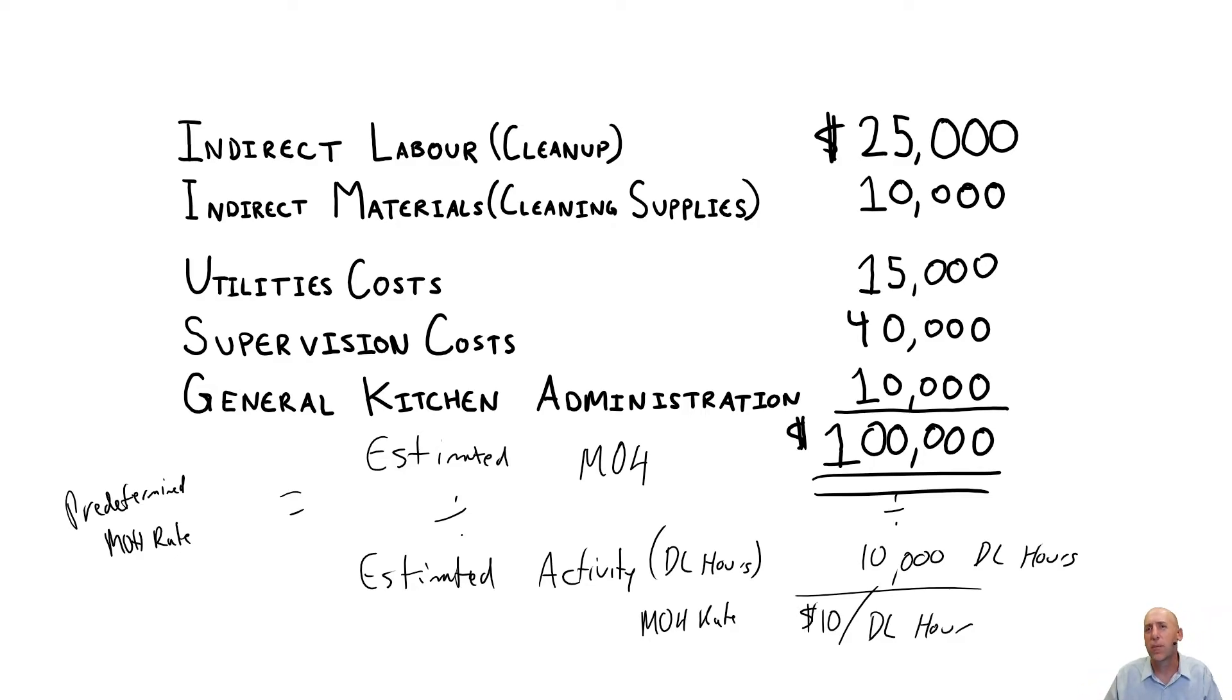In those circumstances, companies that are looking for something a little bit more accurate might move to an activity-based costing system. An activity-based costing system says one overhead rate is not enough. We need several. We have so many different kinds of overhead.